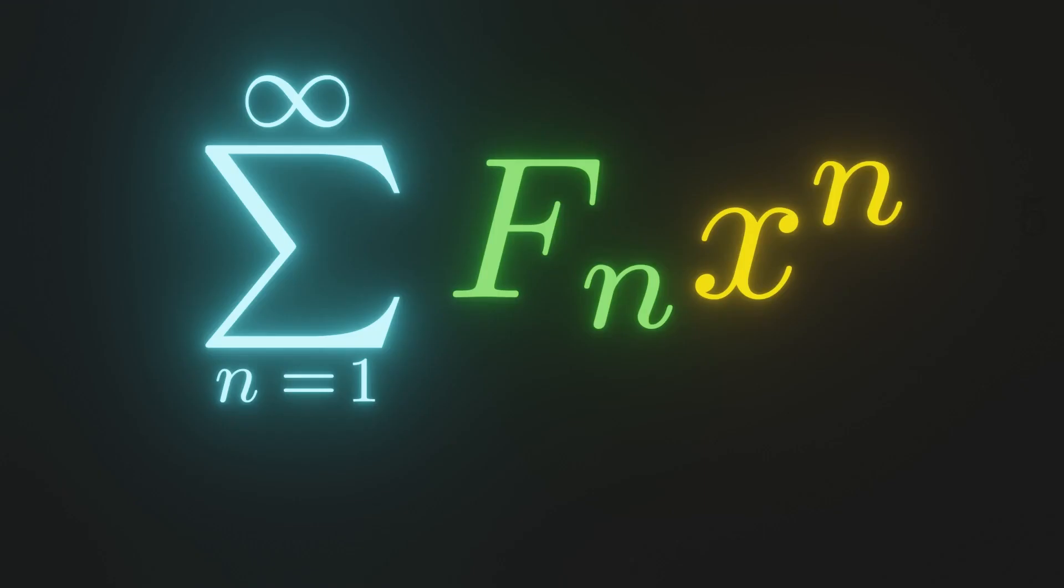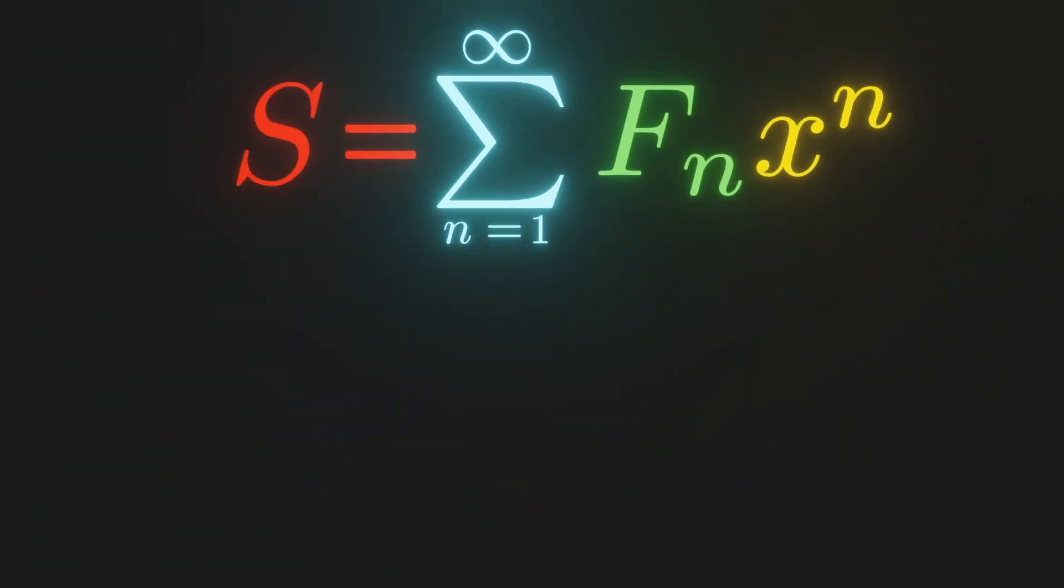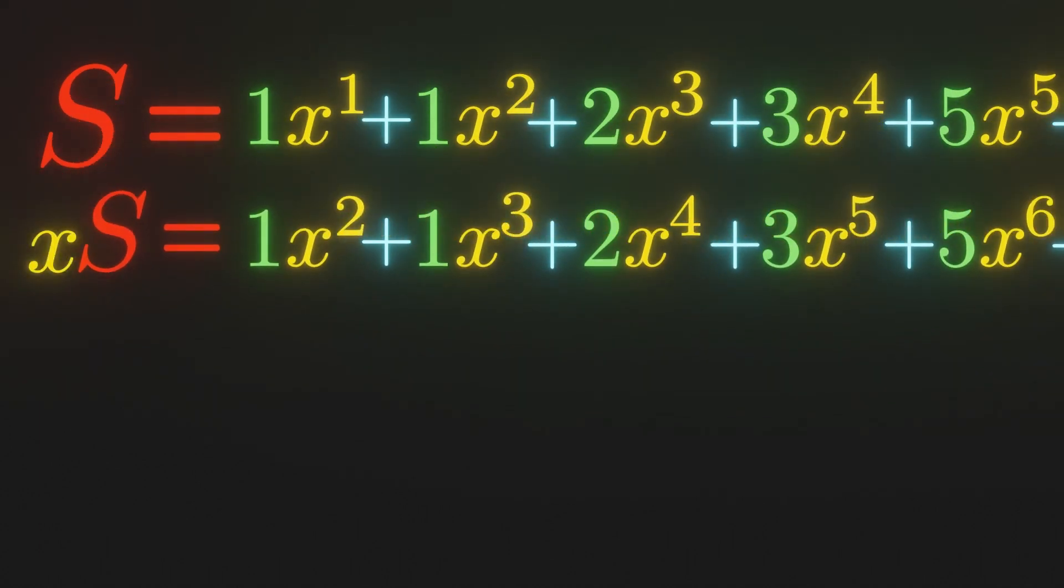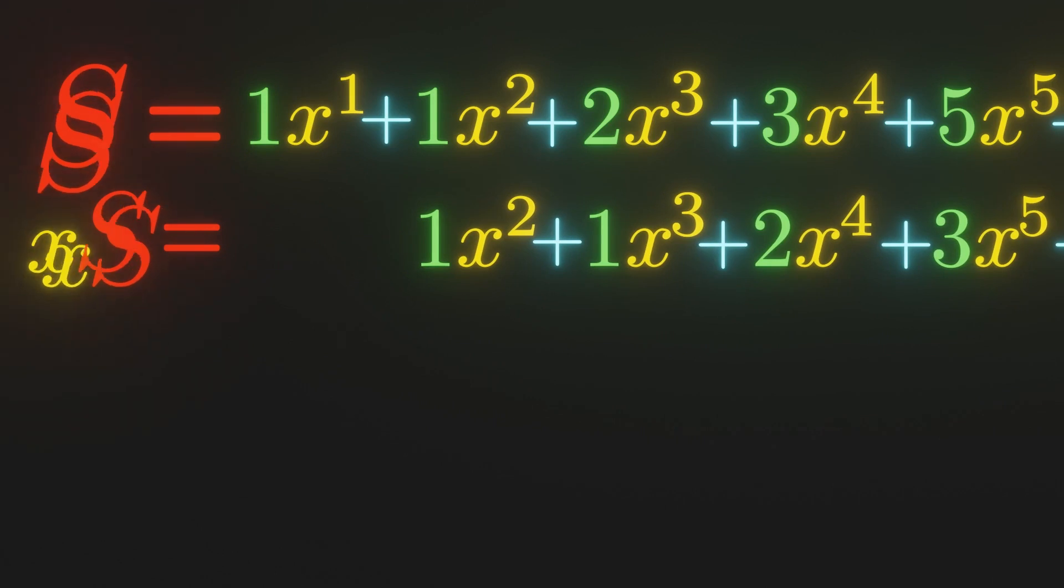So our infinite power series will be written out like this. Let's give this series a name. Let's call it s. Let's expand it out to make it easier to follow. Next, we will introduce another copy of s. Then we can multiply this by x and align the terms so we can subtract them.